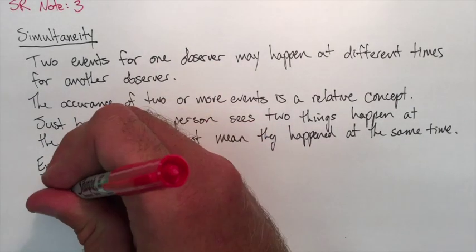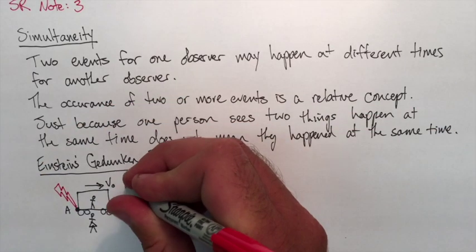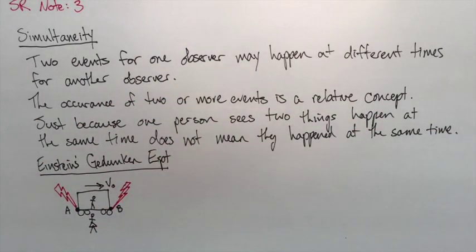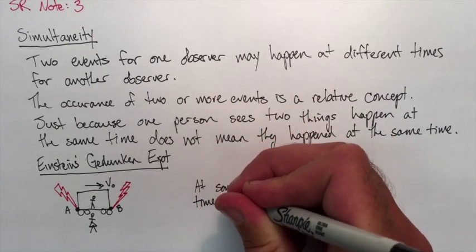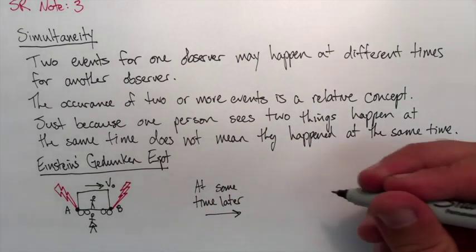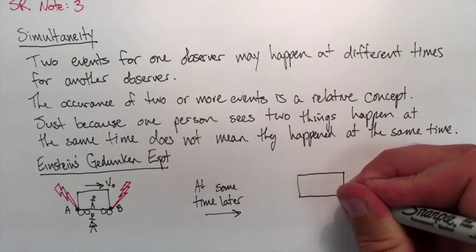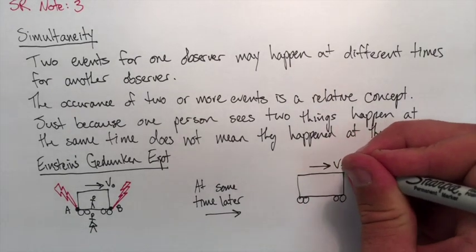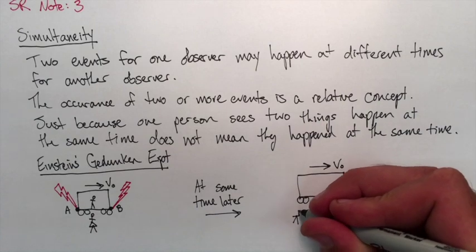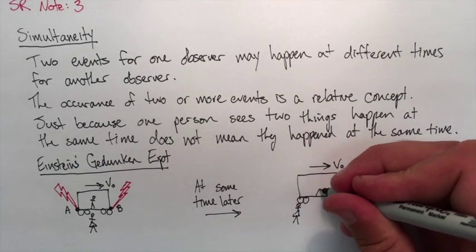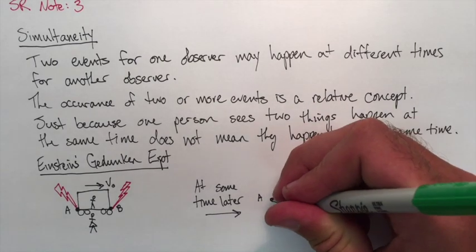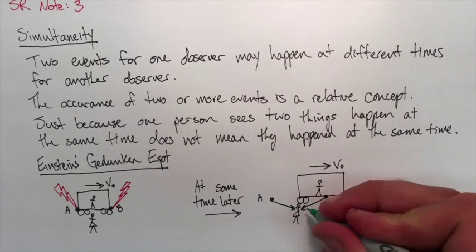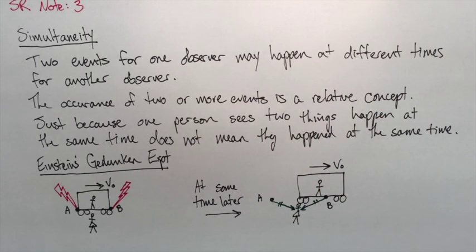Now, right when they're matched up, two lightning bolts hit the train exactly at the same time. So we're going to try and figure out what Bob sees versus what Alice sees. At some time later, the train is still moving to the right. Alice is left behind, still at the platform. Bob has moved, but here—those were A and B before.